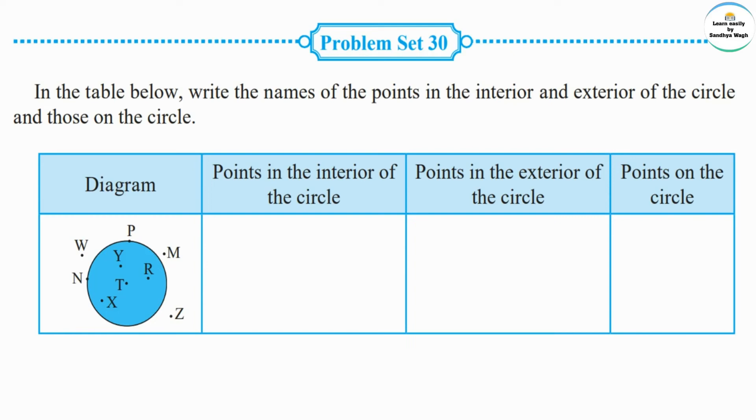First, points in the interior of the circle: those points are point Y, point T, point R, and point X. Points in the exterior of the circle: those points are point W, point M, and point Z. Then, points on the circle: point P and point N.